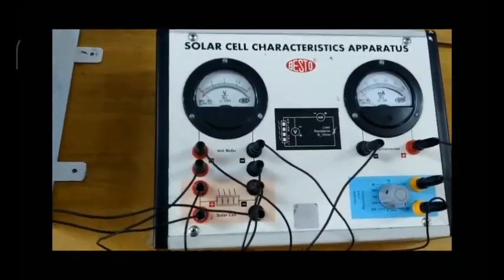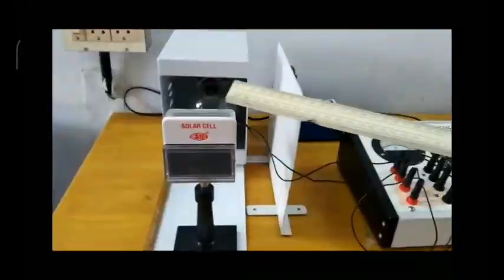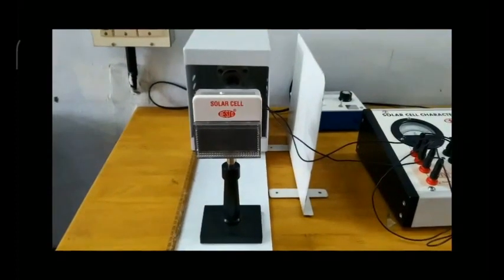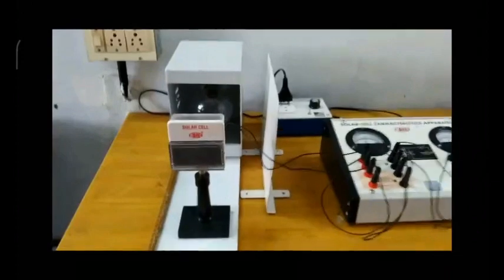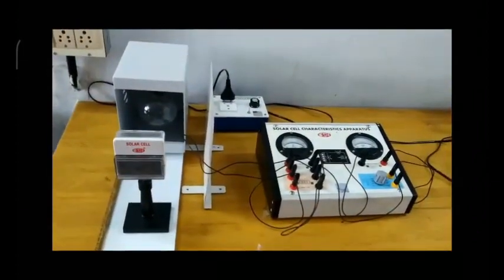It is helpful to understand series and parallel effects of solar cells. A solar cell is basically a p-n junction which converts solar energy into electrical energy. The photo-EMF is proportional to the illumination and the size of the illuminated area.